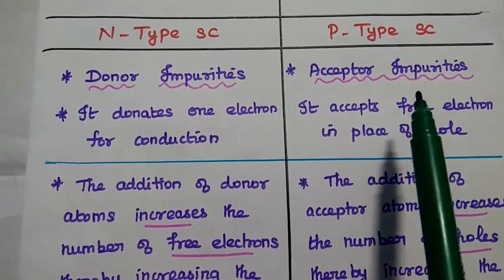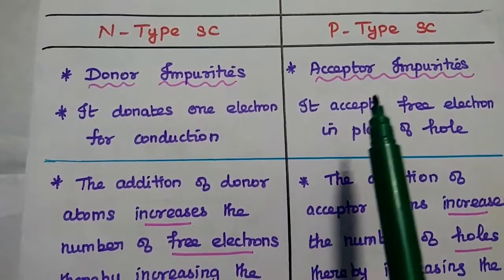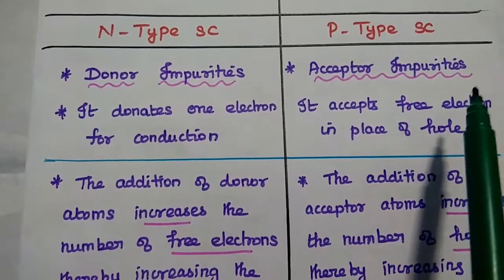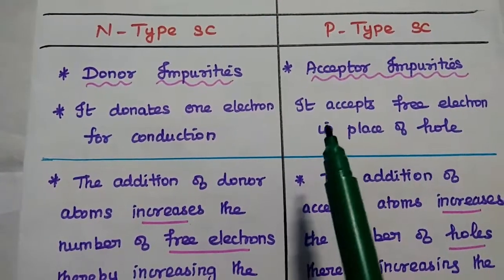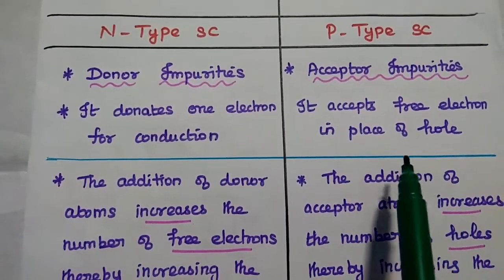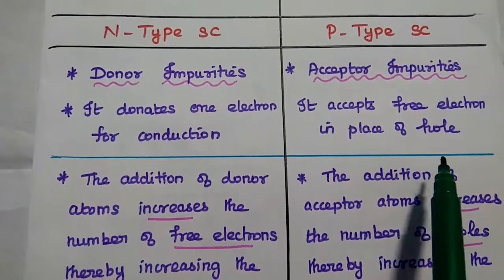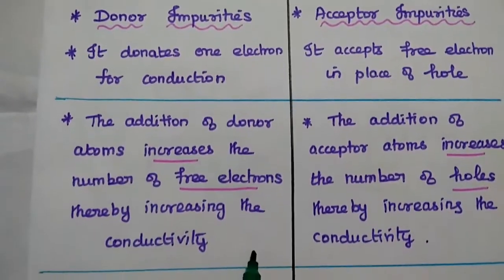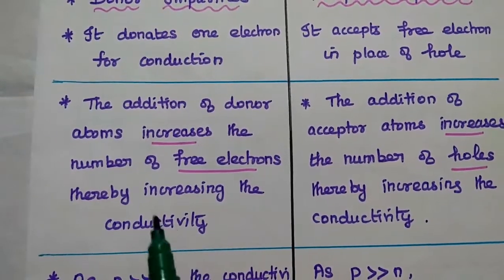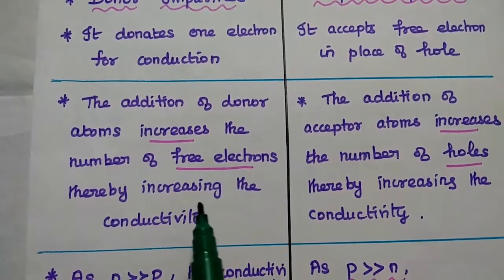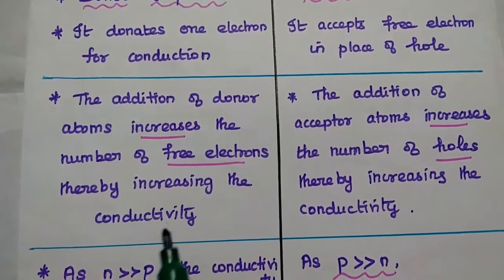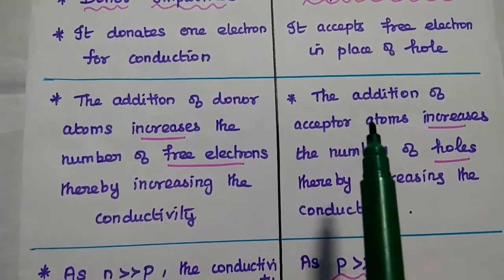In P-type semiconductor, the trivalent impurities are called as acceptor impurities, because it accepts free electrons in place of hole. The addition of donor atoms increases the number of free electrons, thereby increasing the conductivity in N-type semiconductor material.